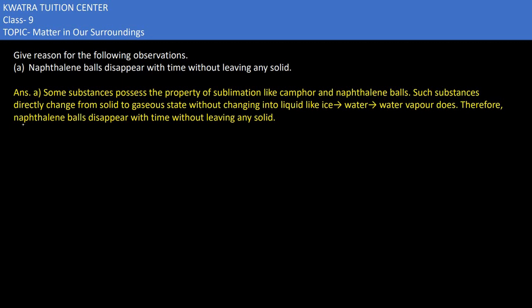In the third question, it says naphthalene balls disappear with time without leaving any solid residue. This happens because of sublimation. In sublimation, a substance changes directly from solid to gas, skipping the liquid state entirely. That is why naphthalene balls disappear over time.